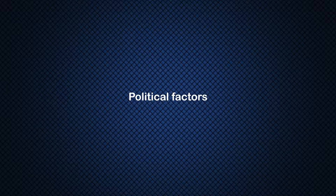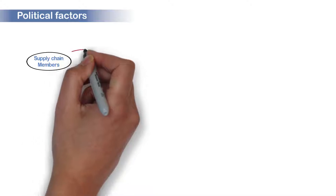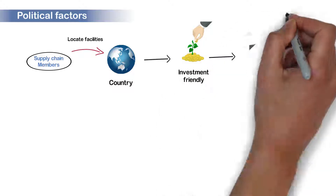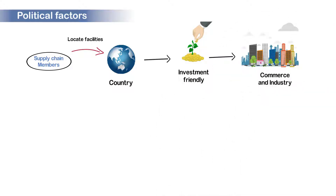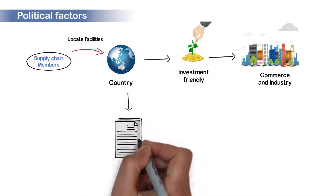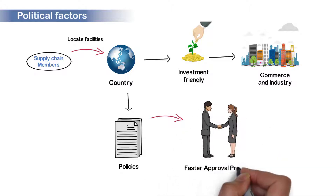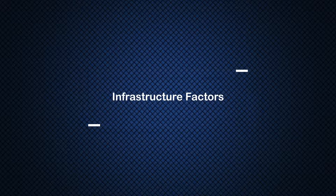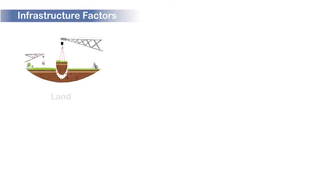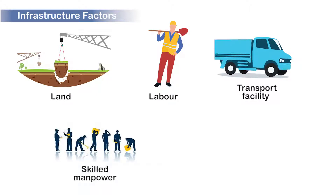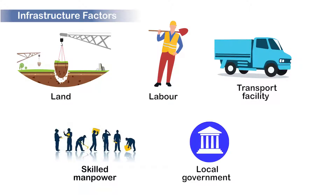The next factor is the political factor. Members of the supply chain prefer to locate their facilities in a country where it is investment friendly and have a well-defined system for commerce and industry. They also expect the policies of the government to be simple and clear with a faster process of approving the setting up of the location facility. Next comes the infrastructure factors. Availability of land with other factors of production like labour, transport facility, skilled manpower, and local government support are important infrastructure factors affecting the facility network design decision.